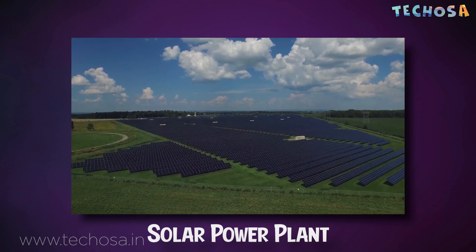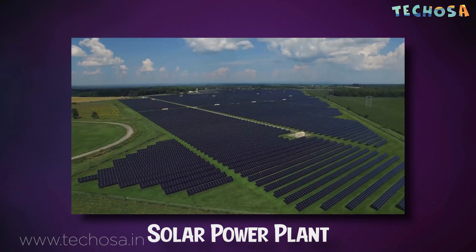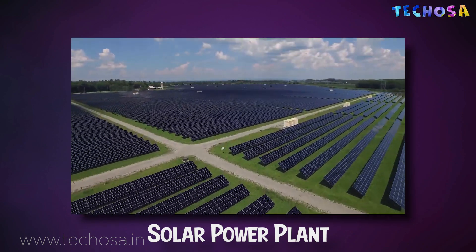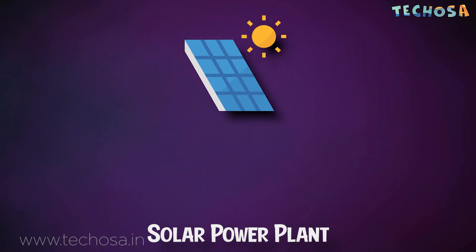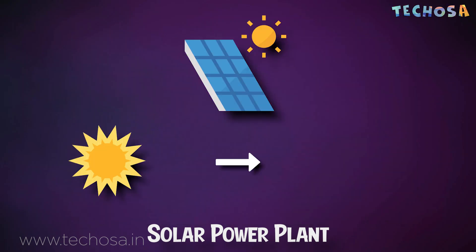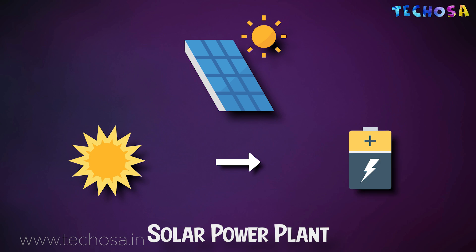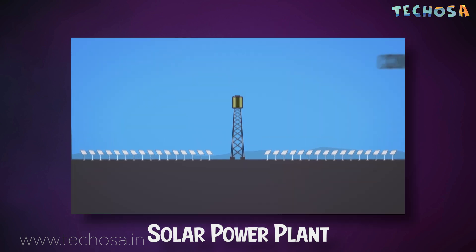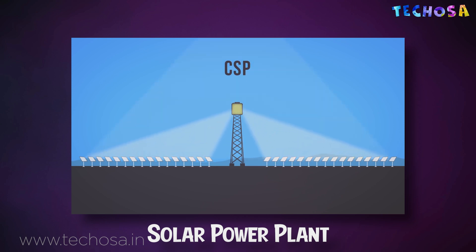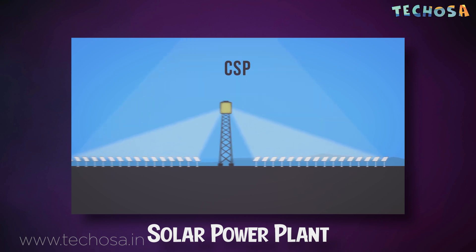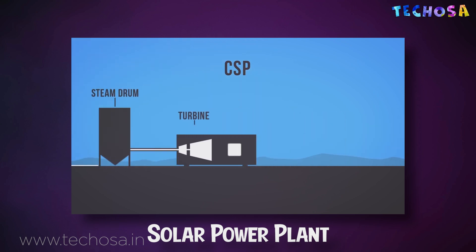Solar power plants come in two types: one which uses solar panels, and another which uses the heat from the sun. In the first kind, a large number of solar panels are arranged on a huge plot of land. These panels have photovoltaic cells that convert light energy into electrical energy. In the other kind, sunlight is collected and concentrated to produce high-temperature heat needed to boil water. The steam is then converted into mechanical energy in a turbine, which powers the generator to produce electricity.